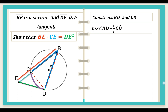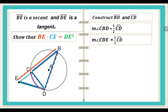Also, we can state that the measure of angle CDE is equal to one half the measure of arc CD — the same arc CD. This is by the tangent chord theorem.